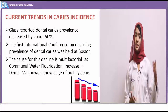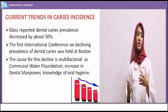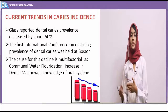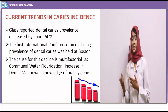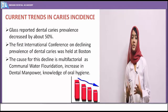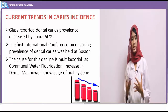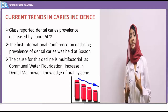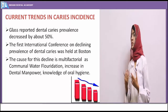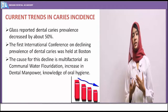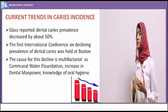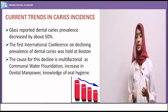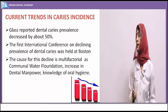Current trends show that while the 17th century saw increased caries, by the 18th and 19th centuries there was a decrease in caries incidence. This has been attributed to factors such as water fluoridation programs, increased dental manpower, and education about oral hygiene, with patients taking better care of their teeth. The first international conference on declining caries prevalence was held in Boston. Currently, caries incidence is somewhat lower compared to 17th century values.